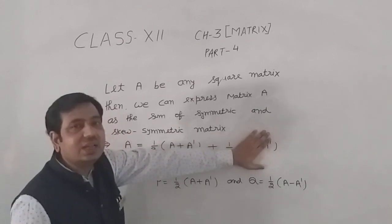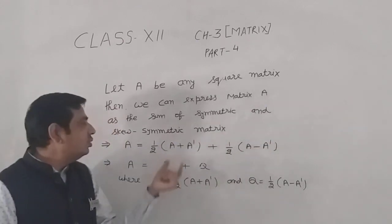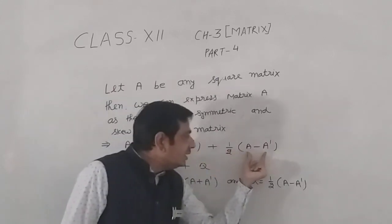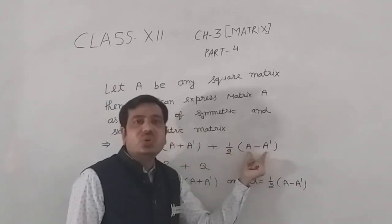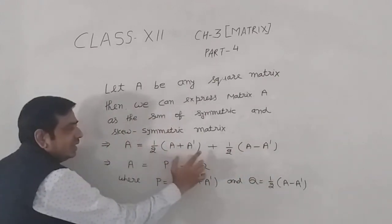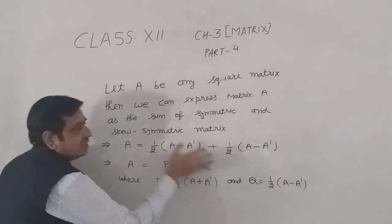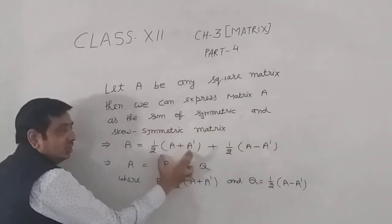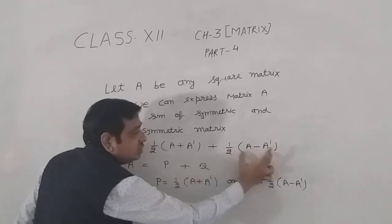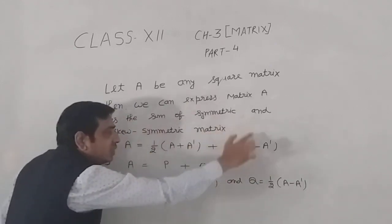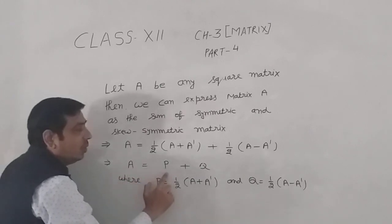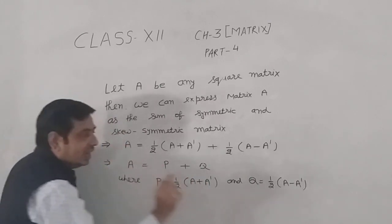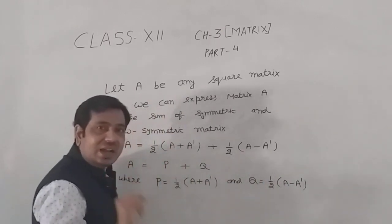This is the formula by which you can express any square matrix as a sum of two matrices — first is symmetric and second is skew symmetric. We denote them by P and Q, so A equals P plus Q, where P is half of (A plus A') and Q is half of (A minus A').